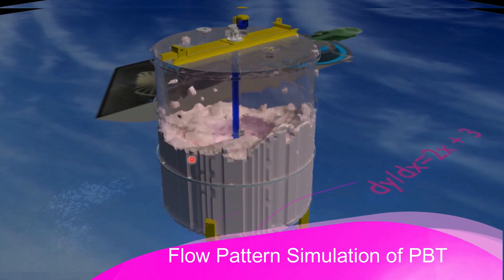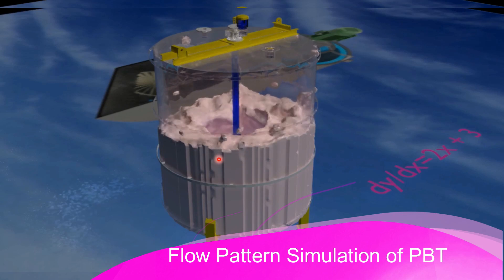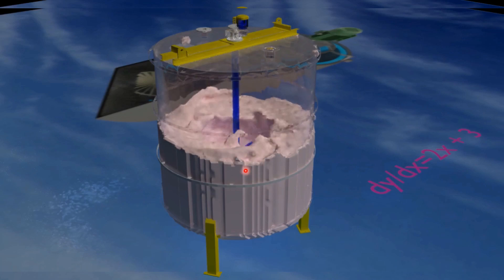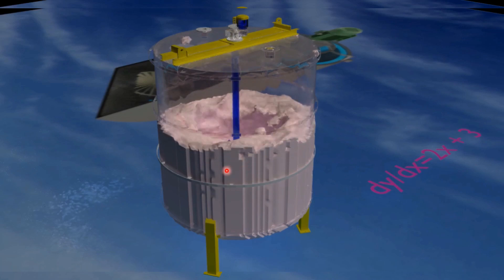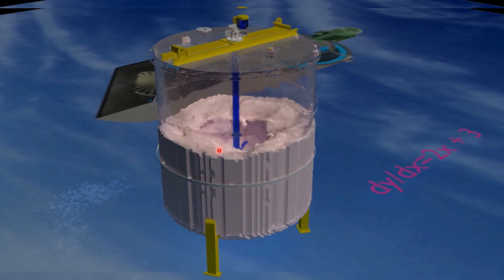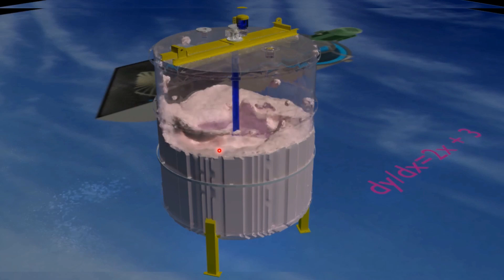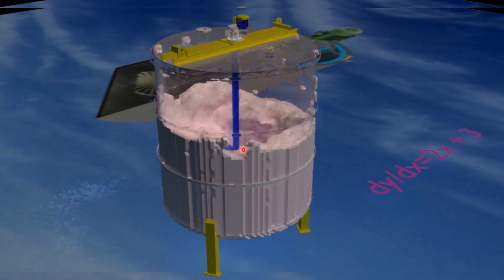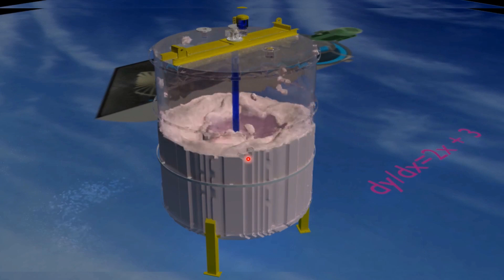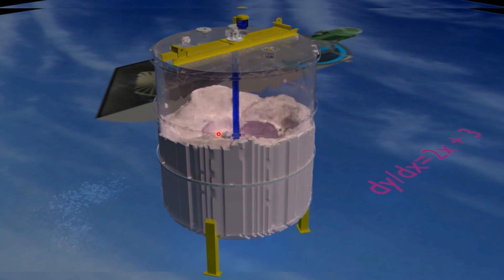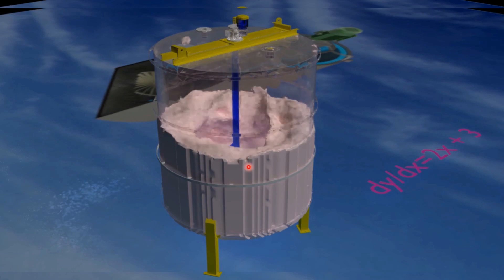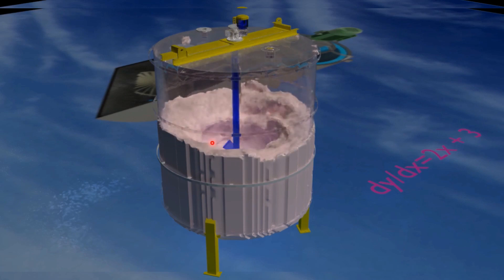Here we have a steel tank fitted with a PBT. When the agitator attains a uniform stage, we can observe the flow pattern very clearly. Some portions of liquid move radially towards the wall of the container, while some liquid also moves upward axially. This confirms the presence of both axial and radial components. Also, a liquid vortex is present in the center of the tank due to the absence of baffles.